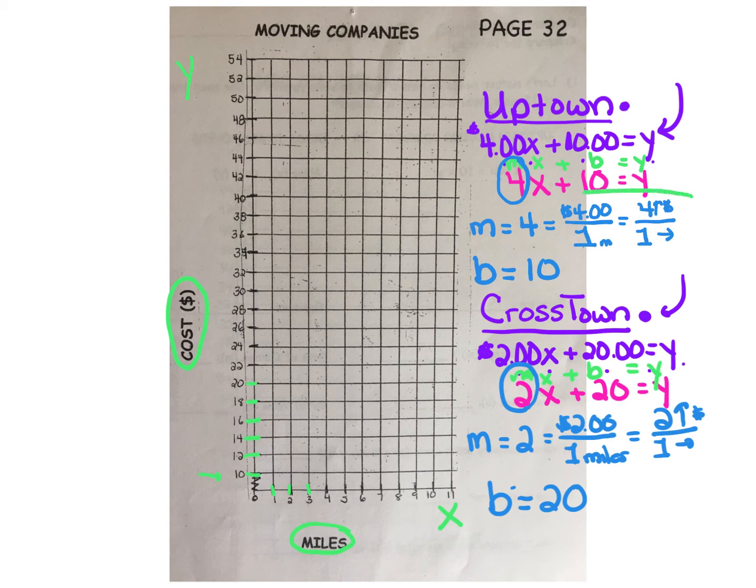Let's go ahead and graph our first equation for Uptown Movers. We can see that our start value is $10, so on that y-axis, anchor your line here at positive $10. Now we must rise up $4, not four blocks, but $4 over one mile.